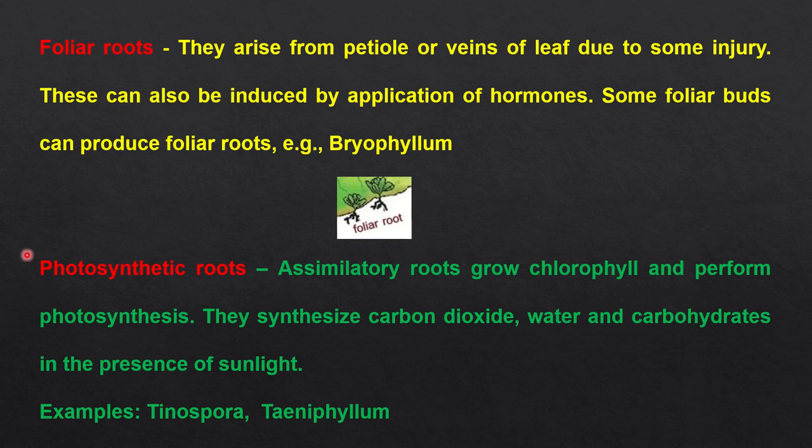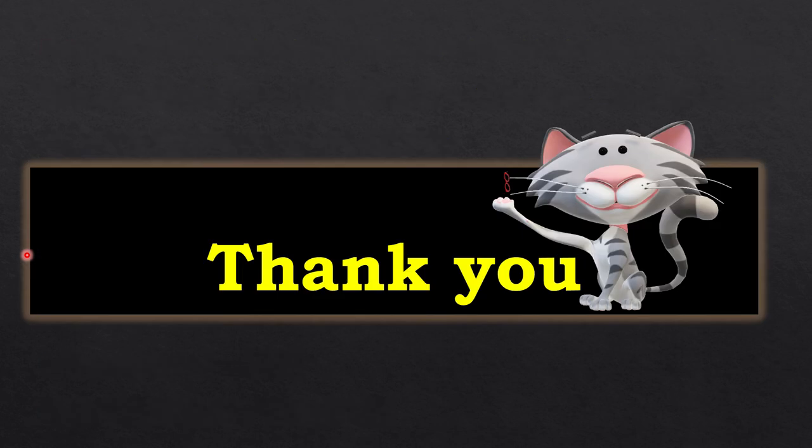Finally, coming to photosynthetic or assimilatory roots. Assimilatory roots grow chlorophyll and perform photosynthesis, synthesizing carbohydrates from carbon dioxide and water in the presence of sunlight. This is found in Tinospora. So this is how we come to an end of our lecture. If you have any doubts or confusion, please feel free to ask in the comment section and I will try my best to help you out. Thank you so much, goodbye.